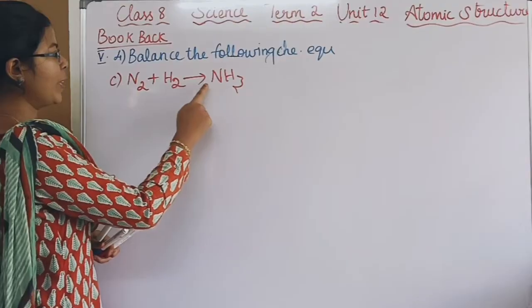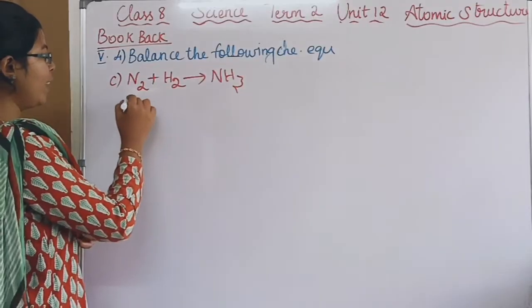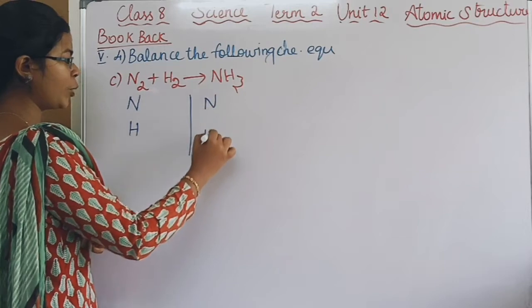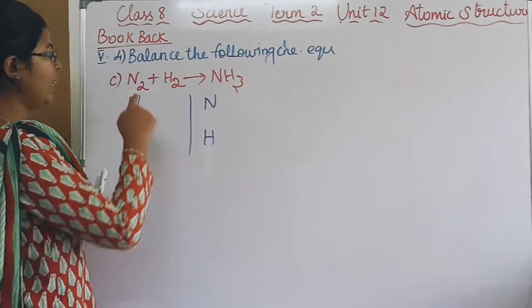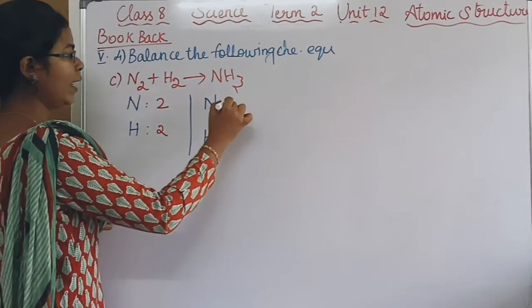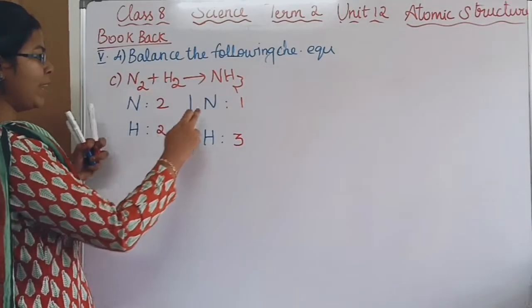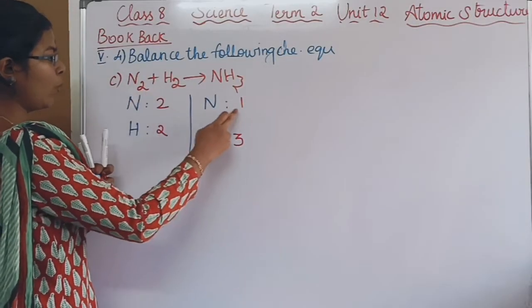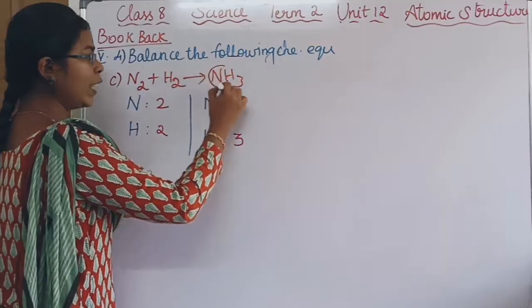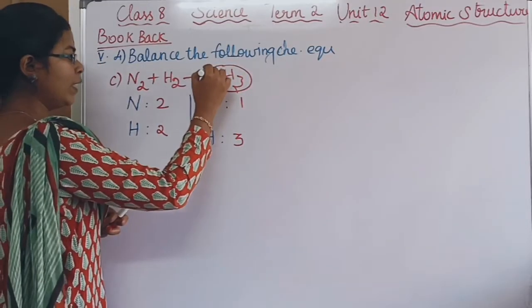The third equation: N2 plus H2 gives NH3. This is the reactant and this is the product. There is nitrogen and hydrogen. Nitrogen has 2 atoms and hydrogen has 1 atom in the product side, while NH3 has 3 atoms of hydrogen. We will need to add a coefficient.